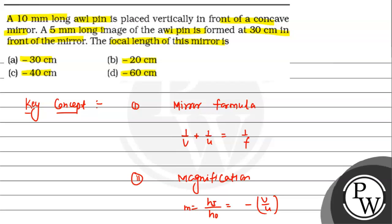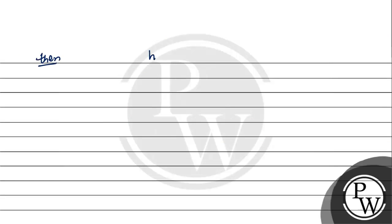Distance of object is 10 mm. Distance of image is 5 mm. M equals HI upon HO equals minus V upon U. So height of image is 5 and height of object is 10 equals minus V.